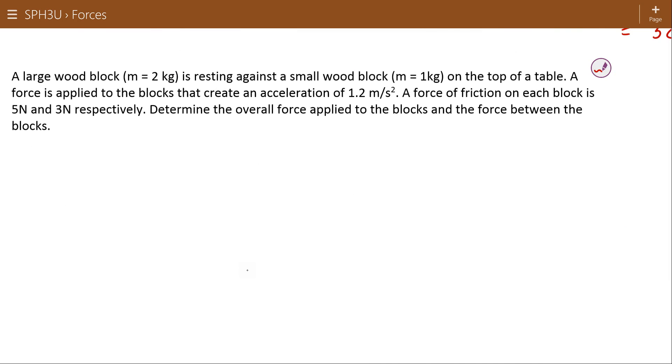Large wooden block, 2 kilograms is resting against a small wooden block, 1 kilogram, on the top of the table. The force of friction on each block is 5 newtons and 3 newtons respectively, so this guy has F_F of 5 newtons, and this guy has 3 newtons, and it's accelerating at 1.2 meters per second squared. I'm assuming in this direction, opposite the force of friction. If I'm going to call this positive, then these forces of friction will become negative.